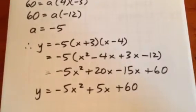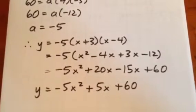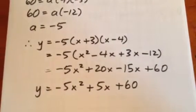We simply have to expand and collect like terms, and we get y equals negative 5x squared plus 5x plus 60.